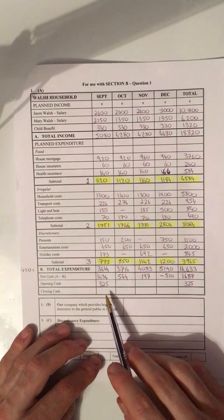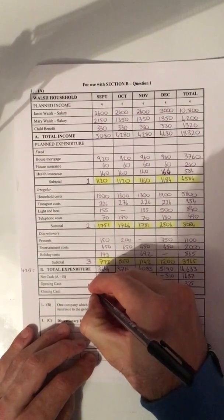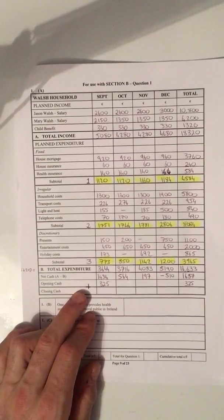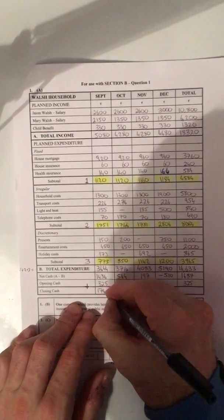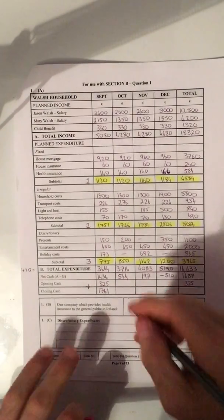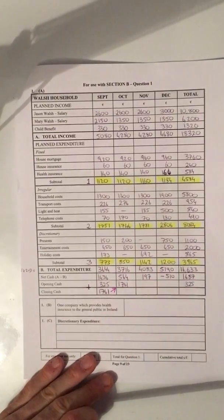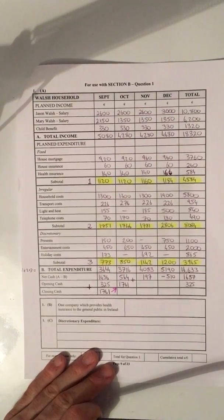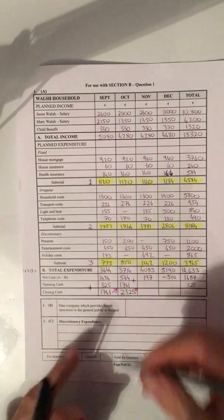Now the next line is our closing cash, and the question always arises: how do I calculate it? We add net cash plus opening cash. So for September: 1436 plus 325 gives us 1761. The rule always is: your closing cash in one month is the opening cash of the next month. So I transfer 1761 up as October's opening cash.